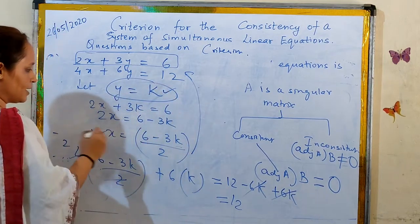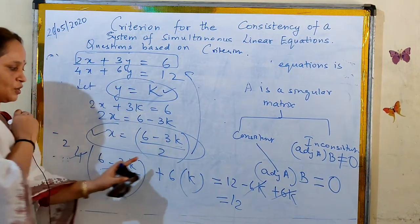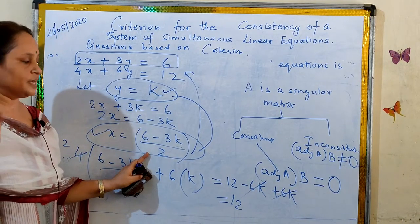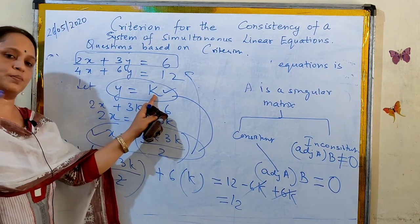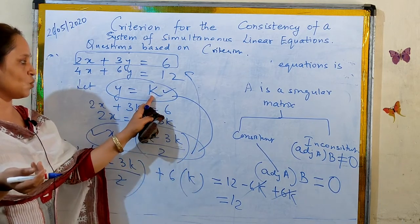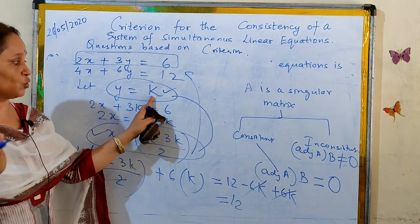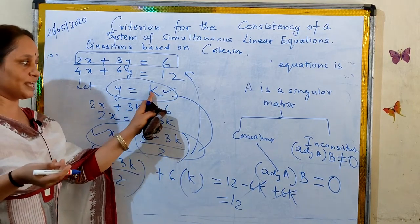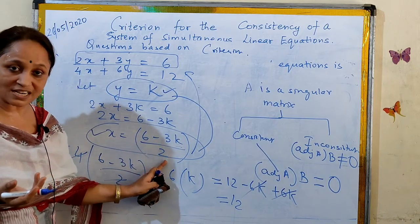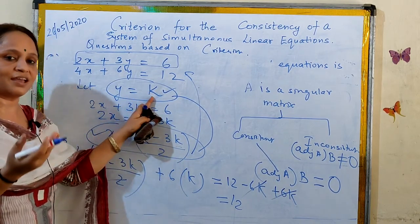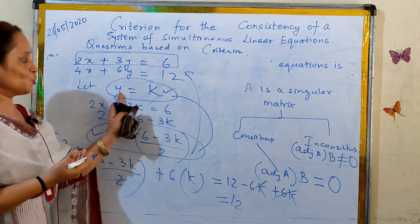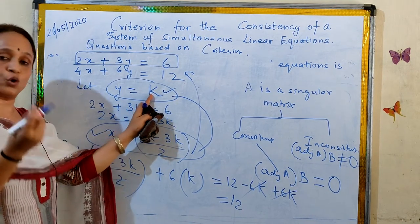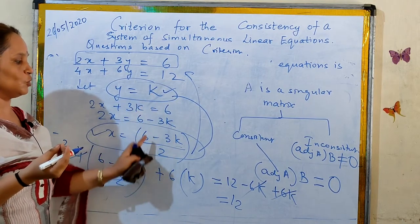So y can be any real number k, and the corresponding x value is (6 minus 3k)/2. For example, if k = 1, then x = 3/2; if k = 0, then x = 3. As you vary k, you get corresponding values of x — that is how there are infinitely many solutions. But again, this is only for understanding; you do not need to solve this in the course.